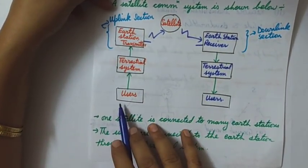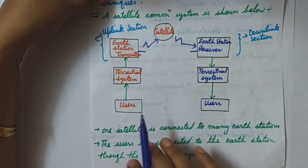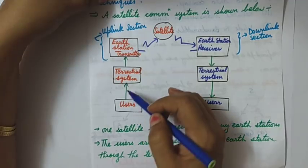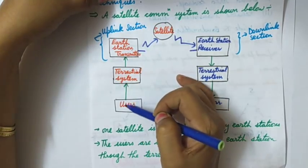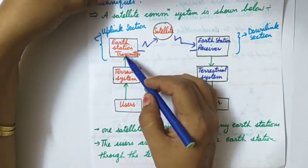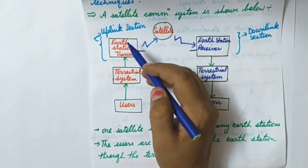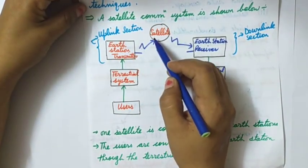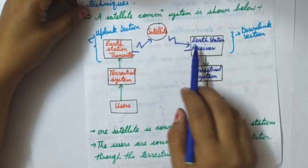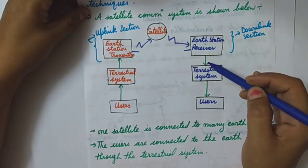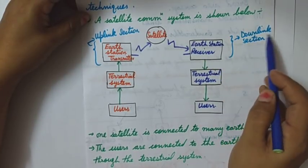The block diagram of a satellite communication system: there is a user in one continent and another user in the other continent who want to communicate. One user sends a message to the earth station via terrestrial systems. This earth station is the transmitter — called the earth station transmitter — and this is called the uplink section because it sends the message up to the satellite. The satellite then retransmits to the earth station receiver.